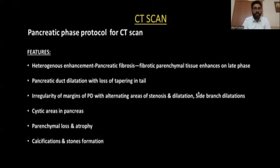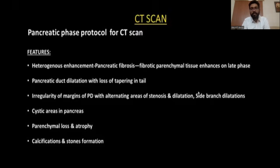The features of chronic pancreatitis are as follows: heterogeneous enhancement indicating pancreatic fibrosis, where fibrotic parenchymal tissue enhances on the late phase; pancreatic duct dilatation with loss of tapering in the tail; irregularities of the margins of the pancreatic duct with alternating areas of stenosis and dilatation; side branch dilatation; cystic areas in the pancreas; parenchymal loss and atrophy; calcification and stone formation.